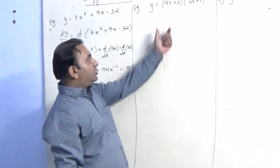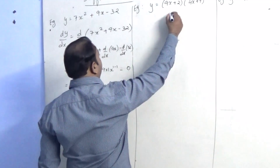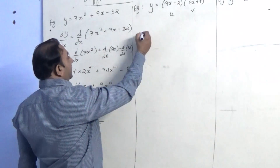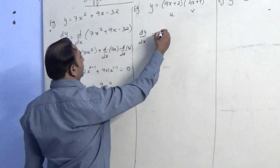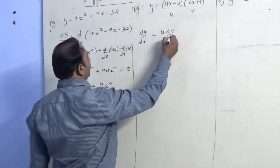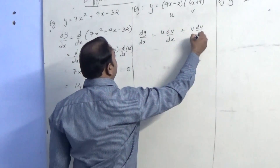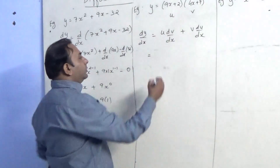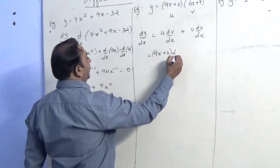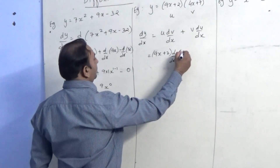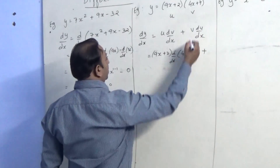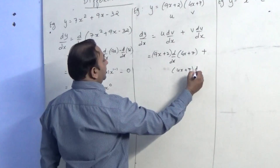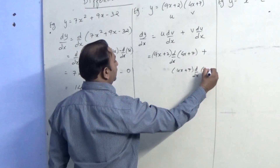Here these two brackets — we will take the first bracket as u and the second as v. The product rule states: dy by dx equals u dv by dx plus v du by dx. Here u is 9x plus 2 and dv by dx is the derivative of v, which is 4x plus 7. Plus v is 4x plus 7 multiplied by du by dx of u, which is 9x plus 2.